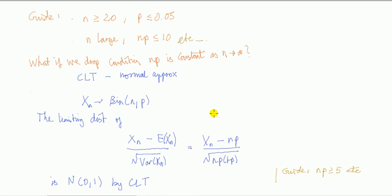If we look back at the proof, you might think to yourself, well, how vital is this condition, np is constant? How about if we try to do the proof where we drop this np is constant, say we've just fixed p and let n tend to infinity?